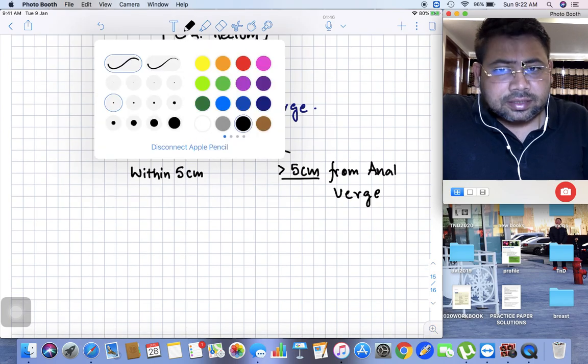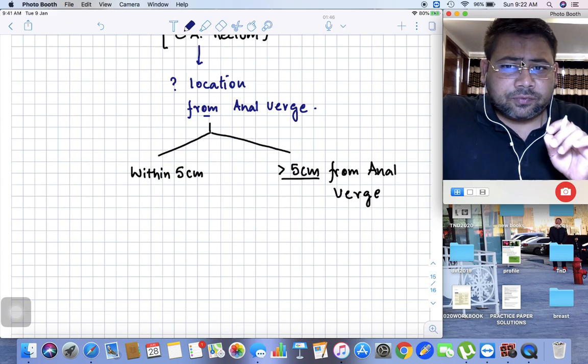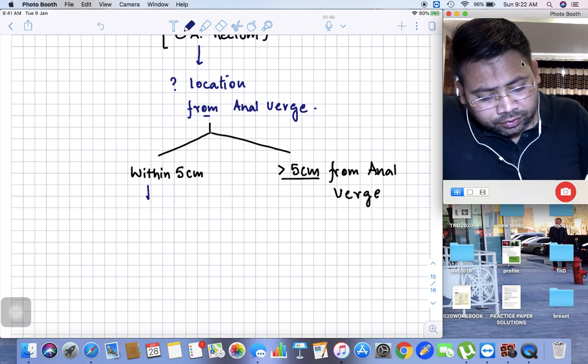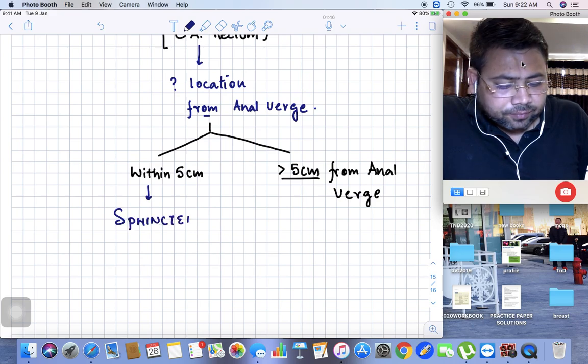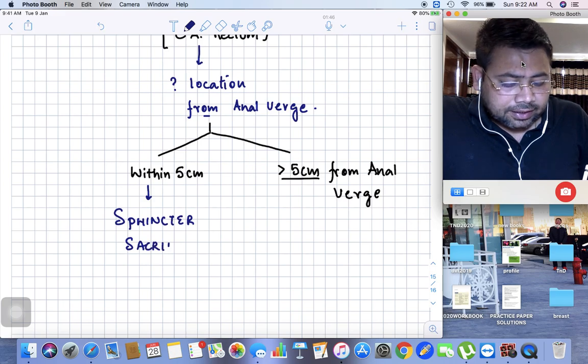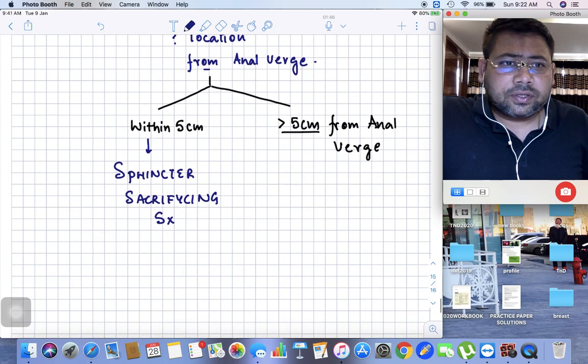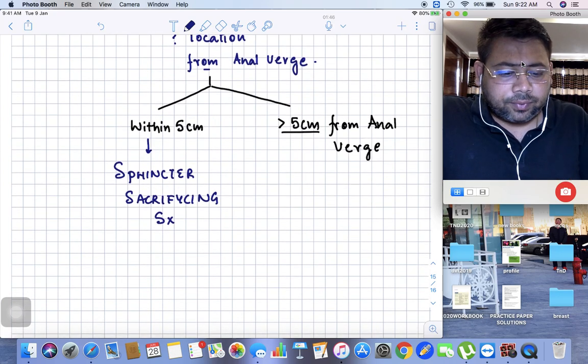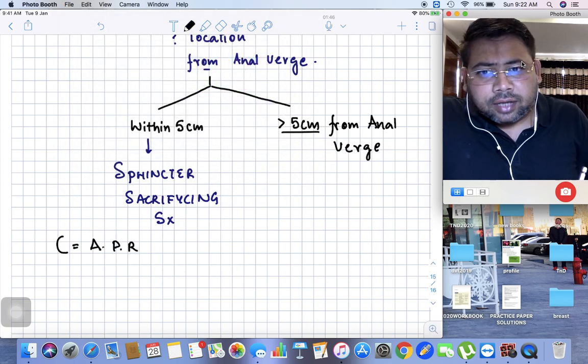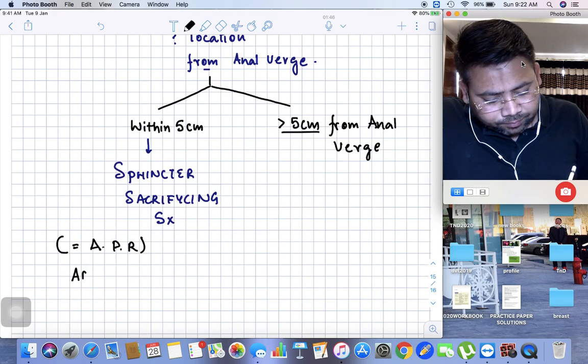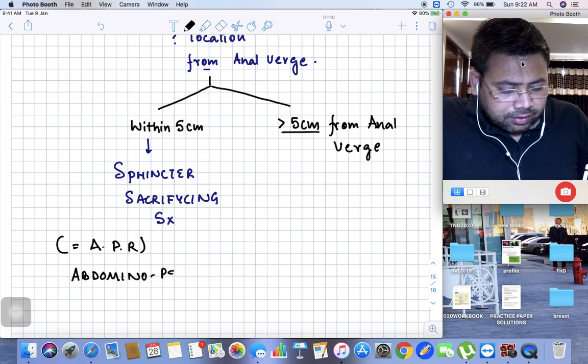If the distance is more than five centimeters from the anal verge, we will be successful in saving the sphincter. But if it is within five centimeters, you have to go for a sphincter sacrificing surgery. We call it APR - abdominal perineal resection.